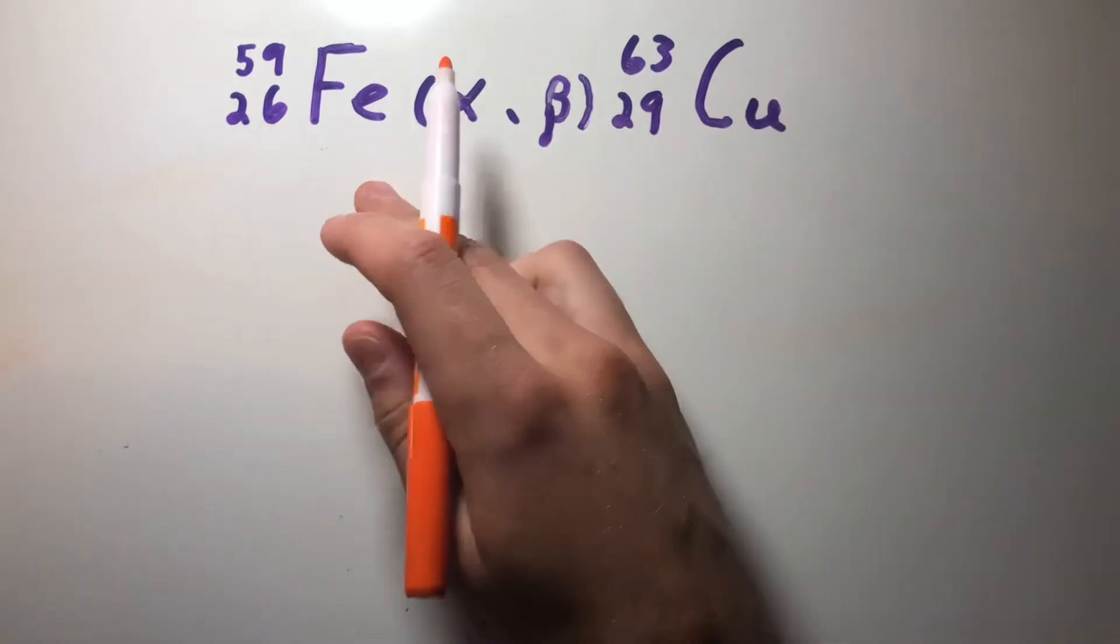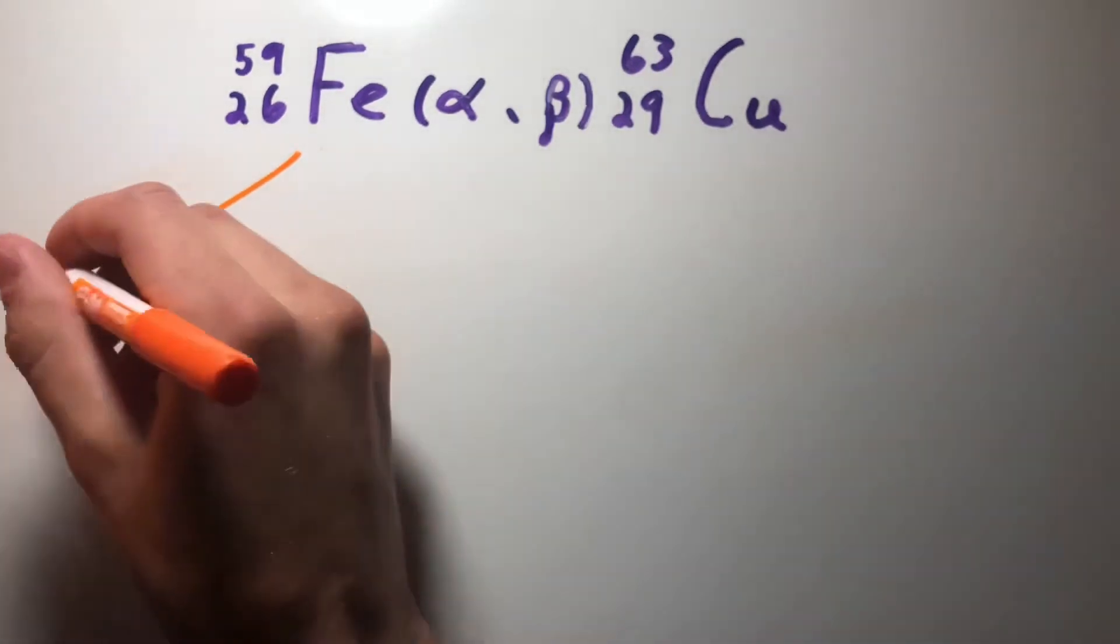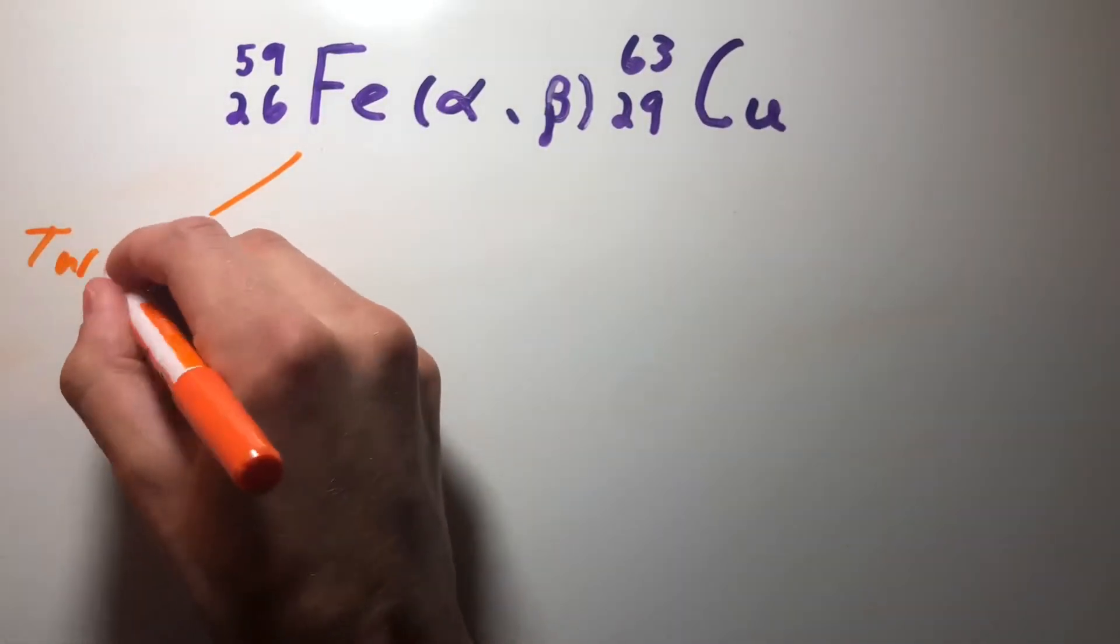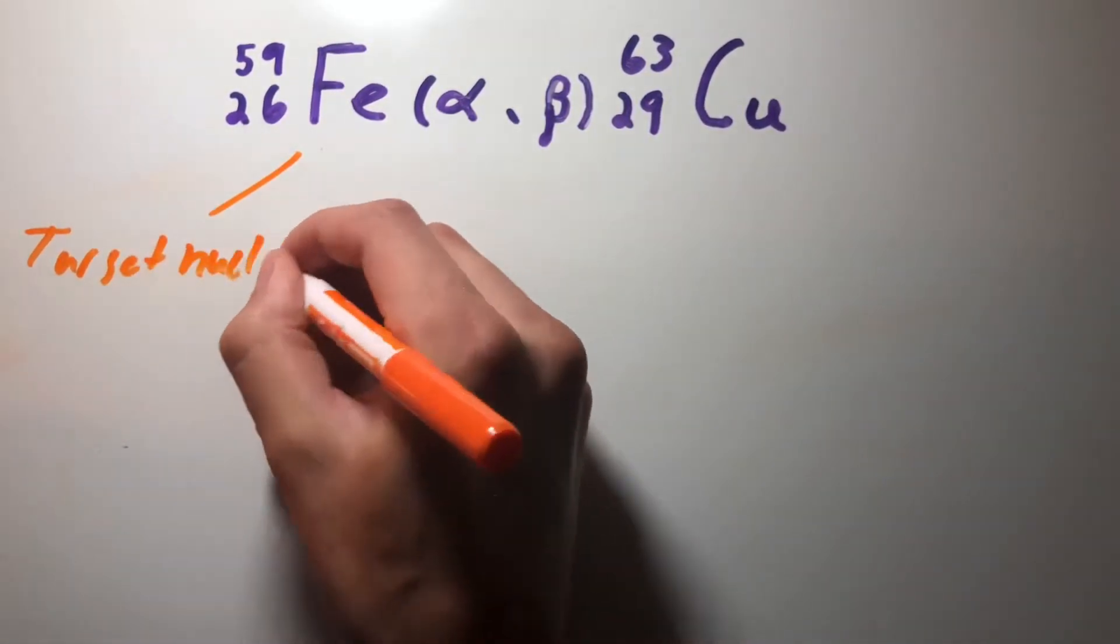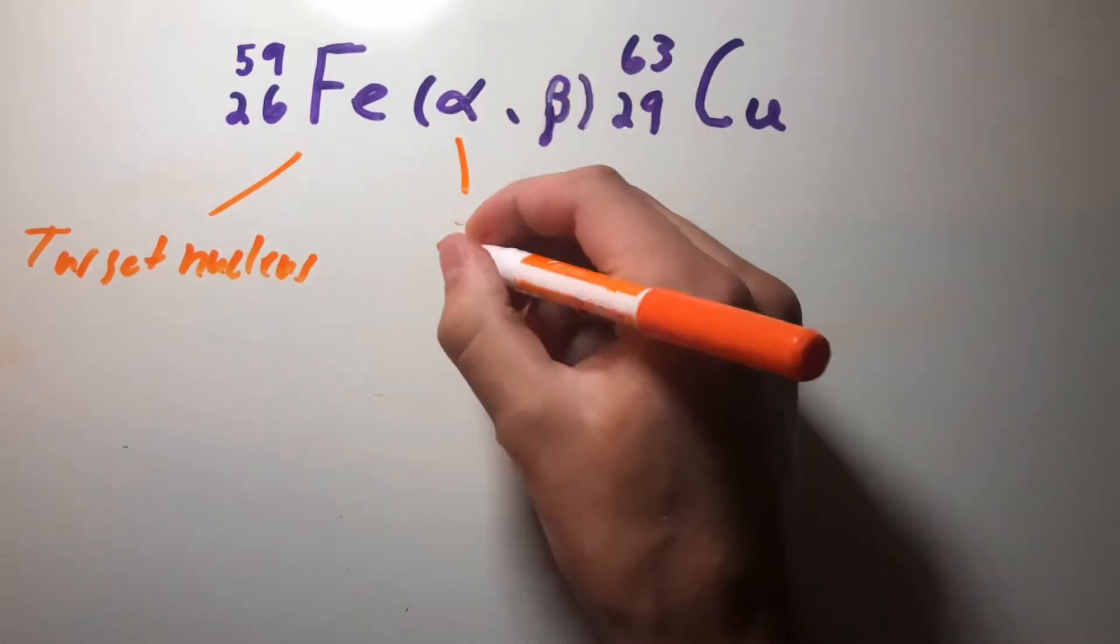In our case we have iron 59 at the start, so we're going to define that. This is our target nucleus. Our alpha particle is our bombarded particle.